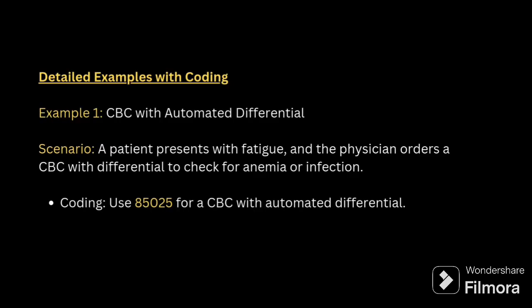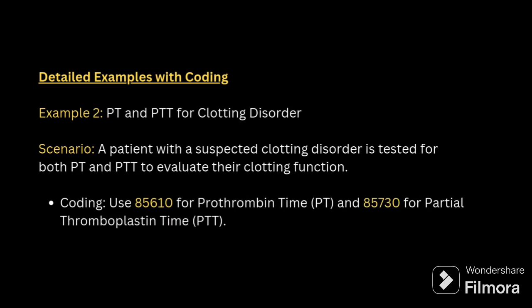Detailed examples with coding. Example 1: CBC with automated differential. A patient presents with fatigue and the physician orders a CBC with differential to check for anemia. For CBC, you will be coding 85025. Example 2: PT and PTT for clotting disorder. A patient with a suspected clotting disorder is tested for both PT and PTT to evaluate their clotting function. For PT, code 85610, and for PTT, code 85730.